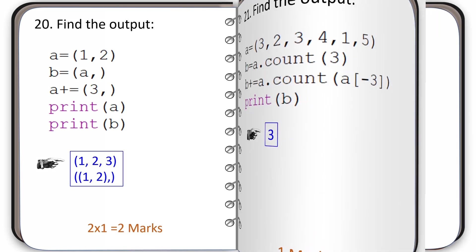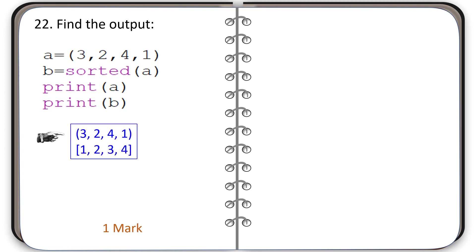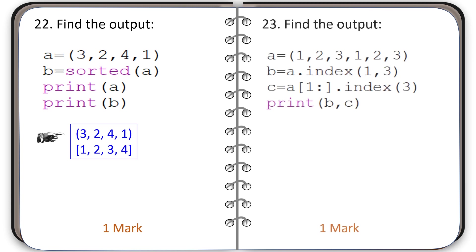Question number 22: find the output of the given code. The output is shown. Question number 23: find the output of this code. The output is shown.